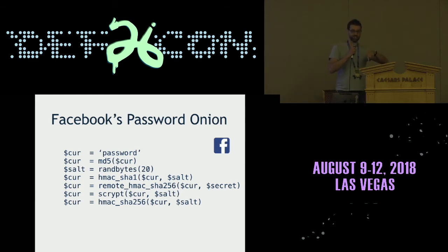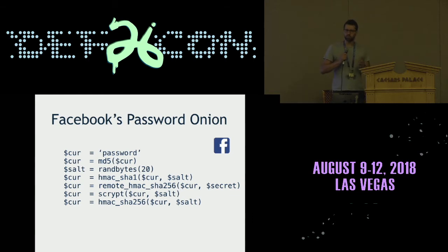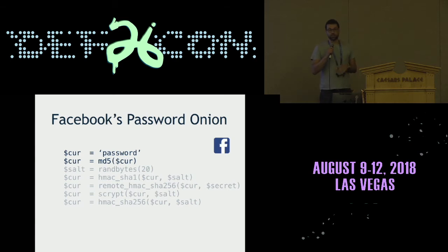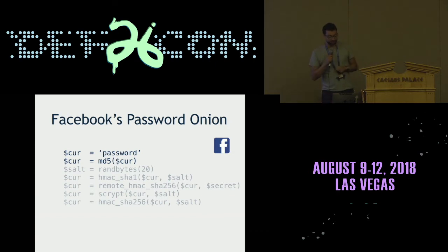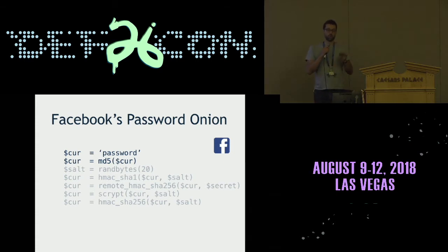That remote machine applies HMAC-SHA256 with a secret, sends the result back. They run that through a memory hard function called scrypt, take the output of scrypt and run it through HMAC-SHA256. It's a little confusing. You might be wondering why would Facebook, who presumably knows something about security, do something like this? Well the reason they do this is historical.